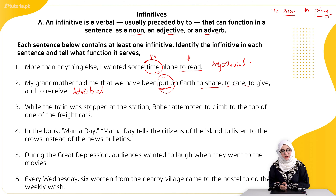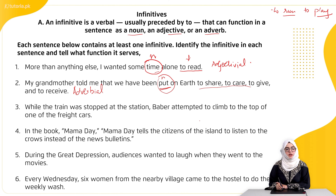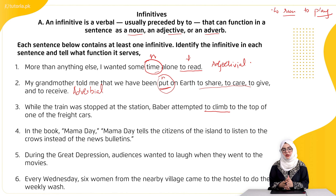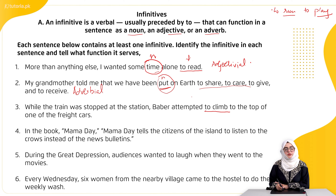Third: 'While the train was stopped at the station, Barber attempted to climb to the top of one of the freight cars.' Yahan 'to climb to the top of one of the freight cars' hamare paas infinitive phrase hai. Ab yeh kaun se type ka infinitive hai? It is acting as a noun — because it answers the 'what' question: Barber attempted to do what? He attempted to climb to the top of one of the freight cars.